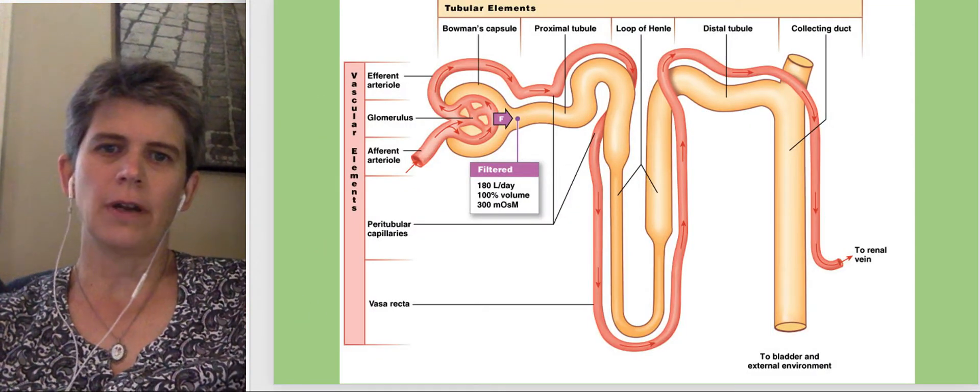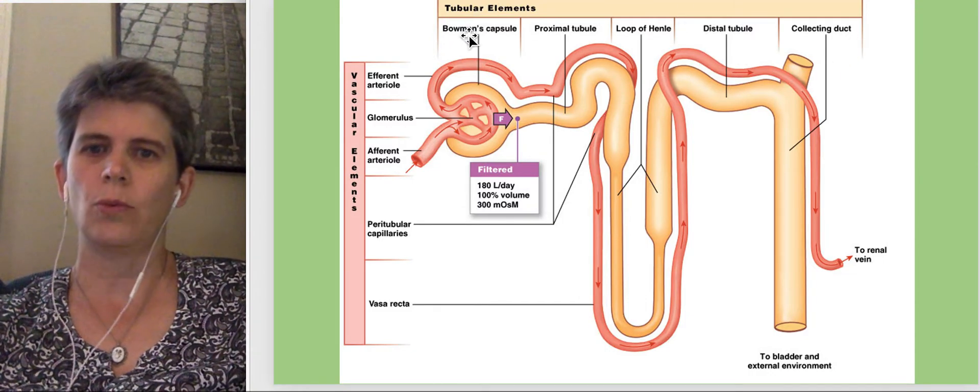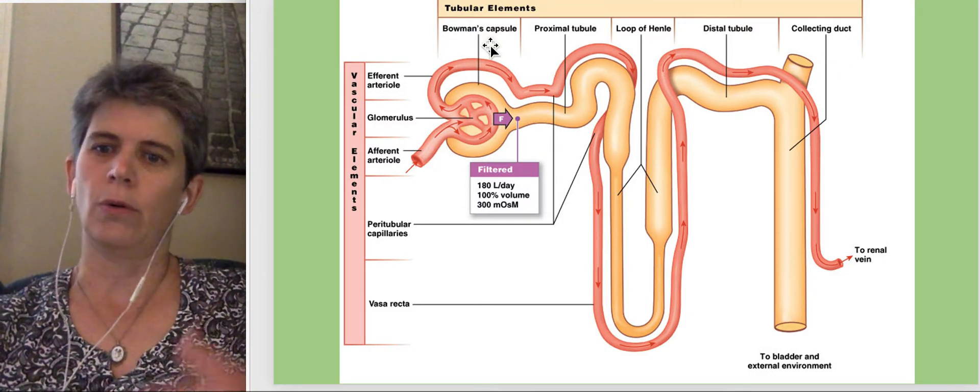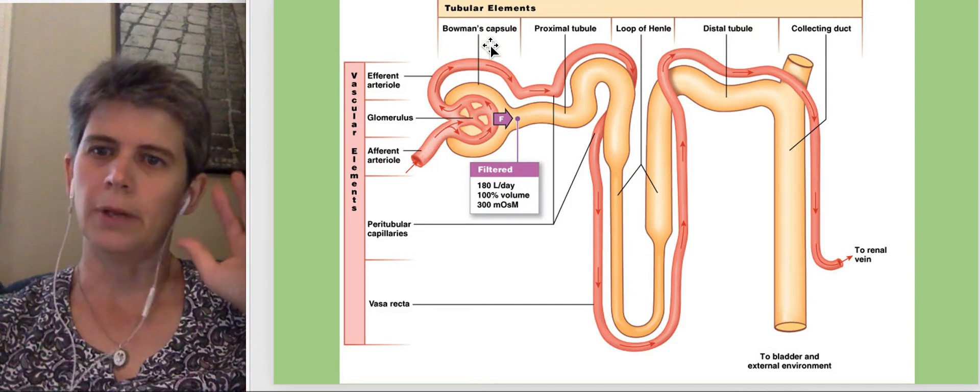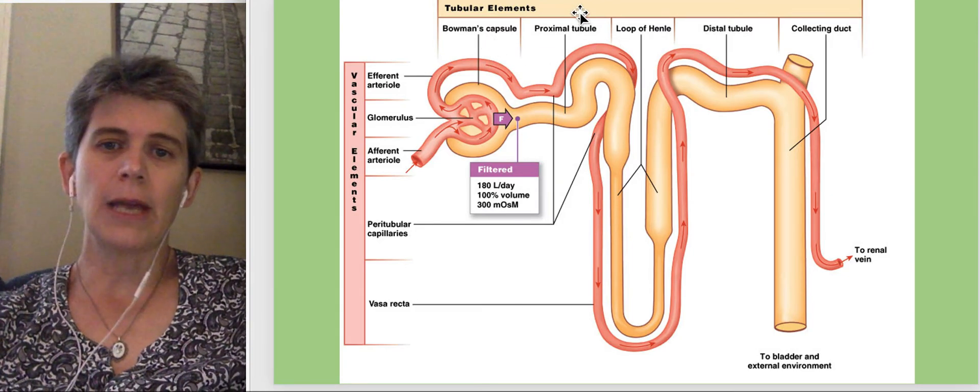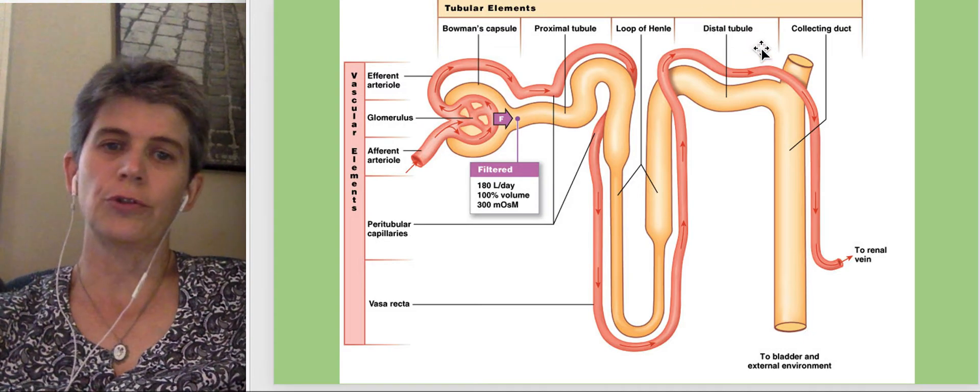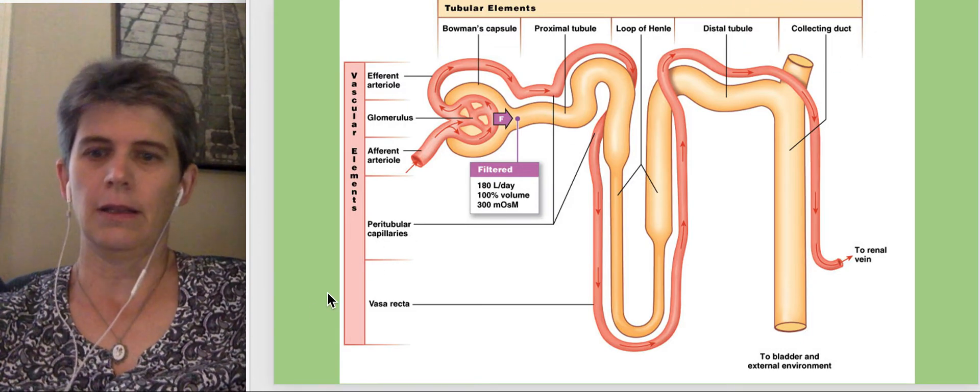The parts of the nephron are listed along the top of this slide and we'll be going through each one. Bowman's capsule or the glomerular capsule is where blood is filtered into the nephron, blood plasma. And then we have the proximal tubule, the loop of Henle, the distal tubule, and finally the collecting duct.